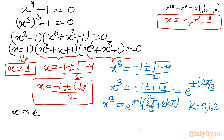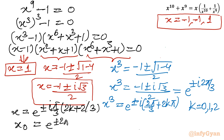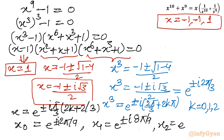Taking cube roots: x = e^(±i·π(2k+2)/9). For k=0: x = e^(±i·2π/9); for k=1: x = e^(±i·8π/9); for k=2: x = e^(±i·14π/9). Again, only x = 1 is the real solution from Equation 2, and the remaining 8 are complex.